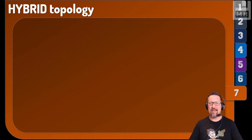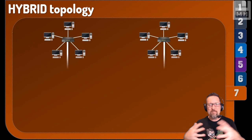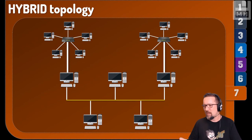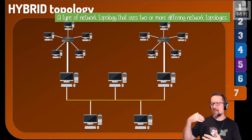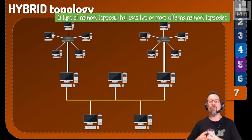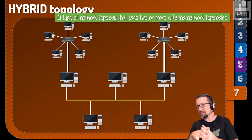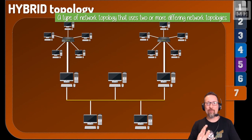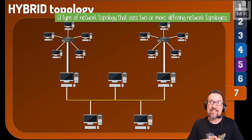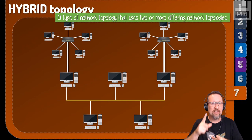Hybrid topology is simply a mix of two or more different network topologies working together. For example, you might have star networks running along a bus topology underneath. Any hybrid topology uses two or more differing network topologies. Go back and watch again if you need to review the descriptions or illustrations. The most common network topology is the star network.